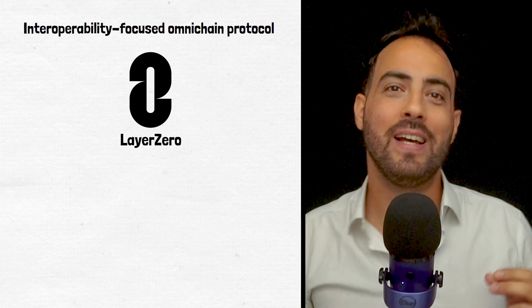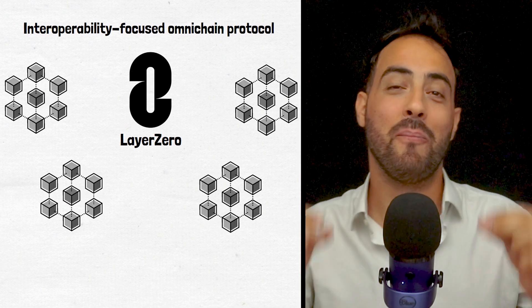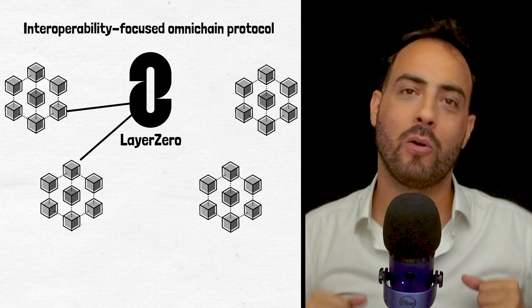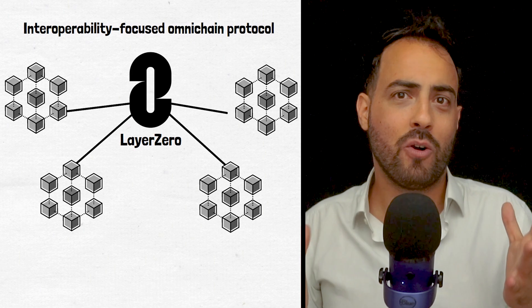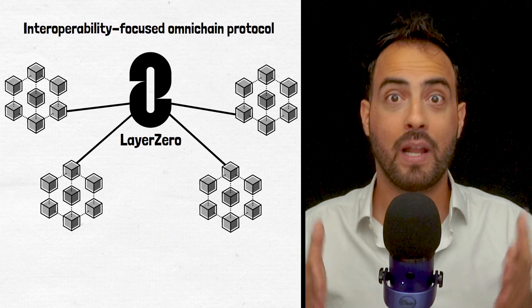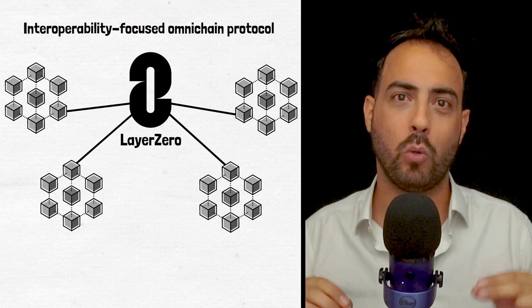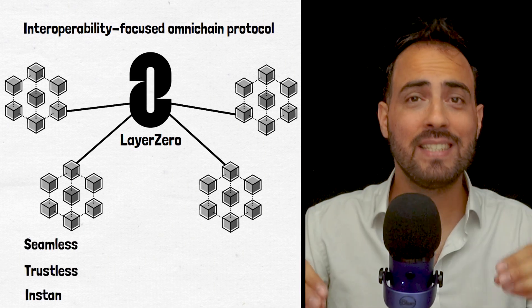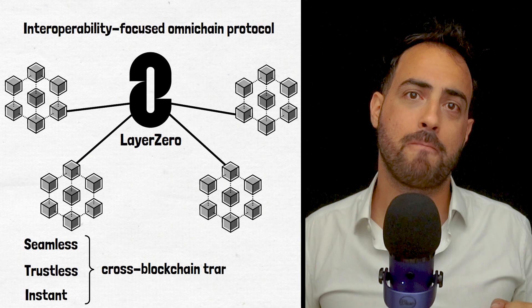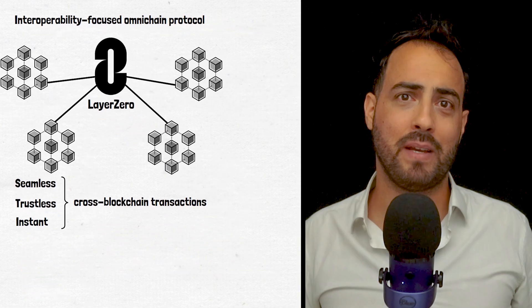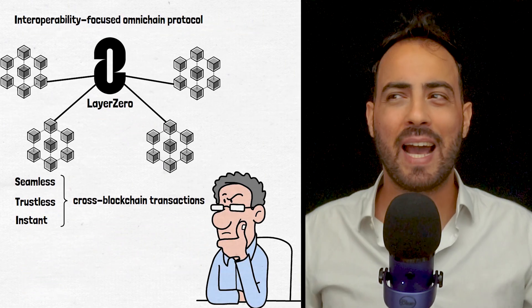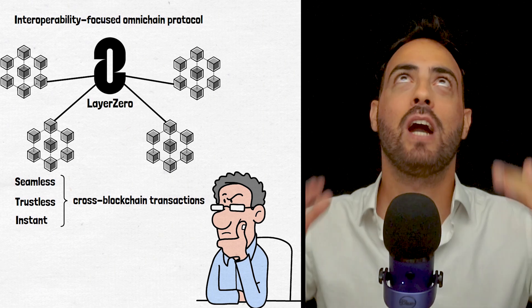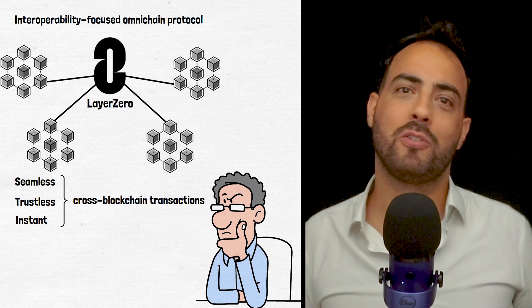Layer 0 is an interoperability focused omni-chain protocol designed for lightweight message passing across multiple blockchains. Layer 0 has been designed to be the optimal blockchain interoperability solution by providing seamless, trustless and instant cross-blockchain transactions. But what exactly does this mean? Where is Layer 0 and how does it enable interoperability across blockchains? Today we find out.